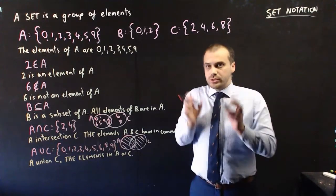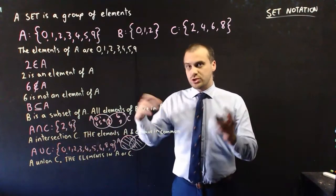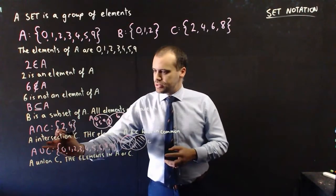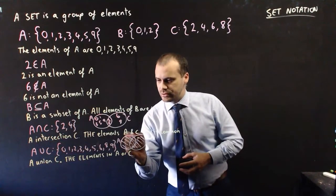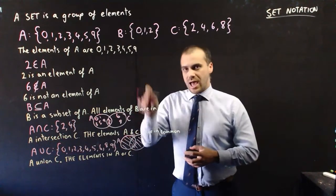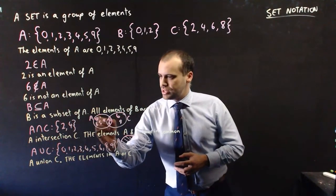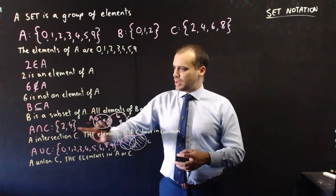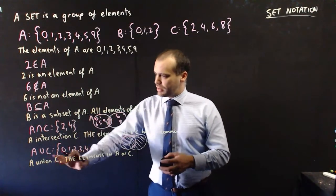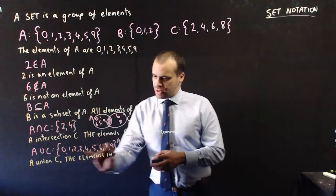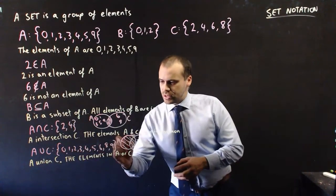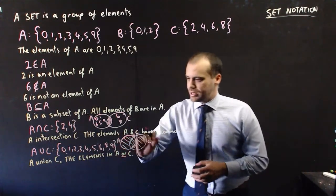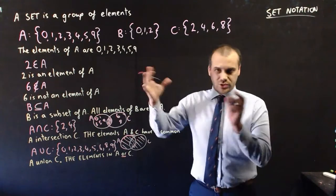Important to note: intersection versus union — students get them confused. Intersection means 'and' — A and C — and it's just this overlapping section. Whereas union is 'or,' and it represents both of those circles combined.